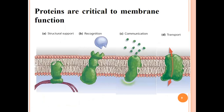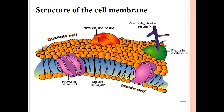Protein is critical to membrane function — it provides structure, support, recognition, communication, and transport. As you can see in the figure, structural proteins give the cell membrane a specific structure to prevent it from dissolving or collapsing. Then there is recognition — interactions between cells — followed by communication with different ions or other cells, and then transport. As discussed in previous lectures, there is active transport and passive transport for molecules moving outside to inside or inside to outside the cell.